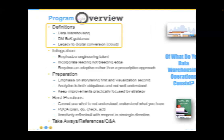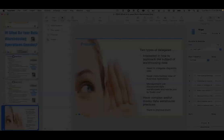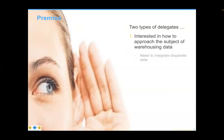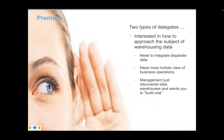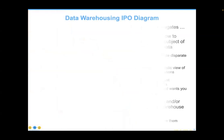There are two types of individuals usually interested in this topic. The first are folks that are approaching the subject with a need to integrate separate, disparate data components, and where someone is clamoring for a more holistic view of business operations — management may have just seen an article about warehousing and said, 'Let's build one.' The other type are people that have overly complex or messy practices and are looking to make improvements. Let's jump right in, starting with data warehousing as an input-process-output diagram, where the output is warehoused data.